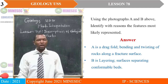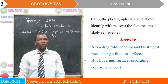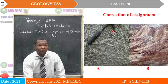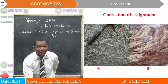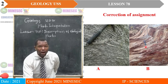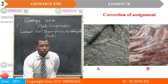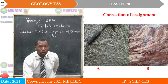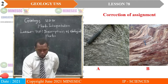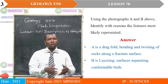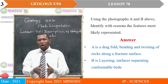Using photographs A and B, identify with reasons the features most likely represented. When we get back to those photos, you will realize that photograph A shows bending and twisting distorted along a certain plane. In photograph B, material has been laid down in regular layers, with no irregularities along the surface as the materials were laid down. So with respect to that, photograph A is a drag fold.